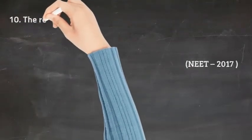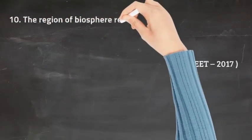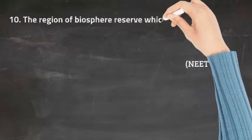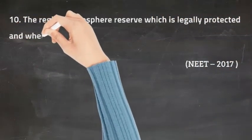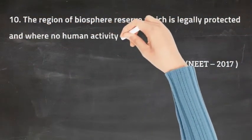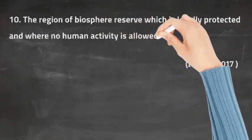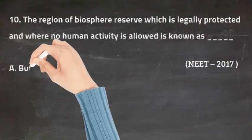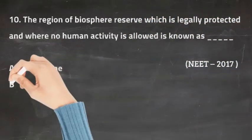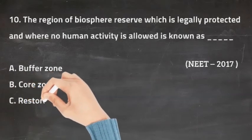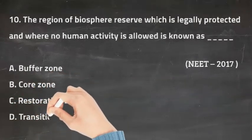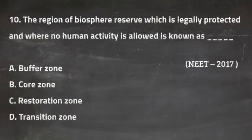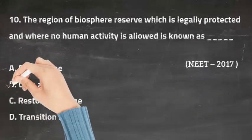The last question for this chapter: the region of a biosphere reserve which is legally protected and where no human activities are allowed is known as — Option A Buffered Zone, Option B Core Zone, Option C Restoration Zone, and Option D Transition Zone. The right answer is Option B, Core Zone. Thank you.